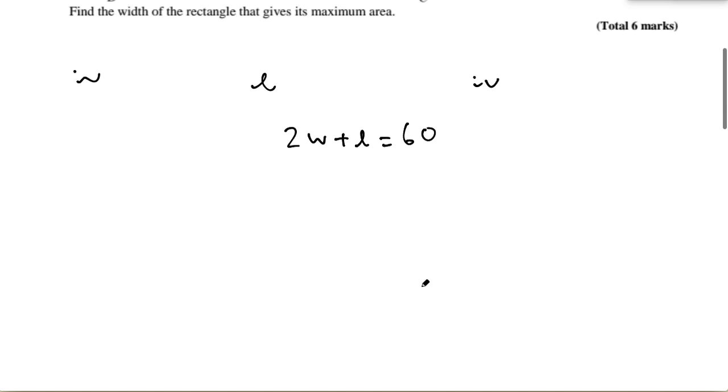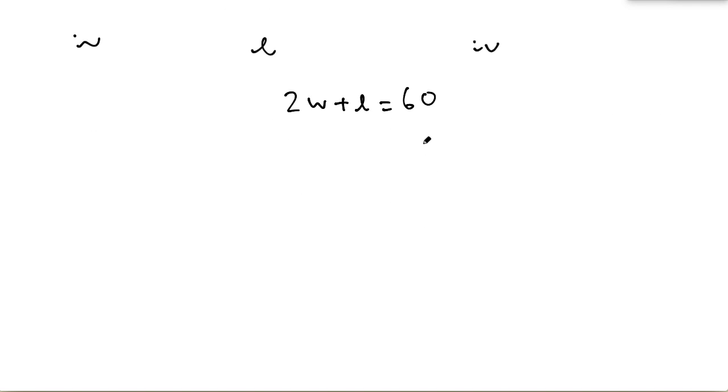a perimeter. And now you also know to simplify, you know L is equal to 60 minus 2w.